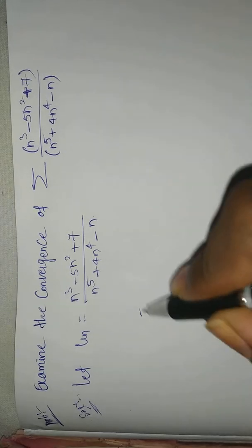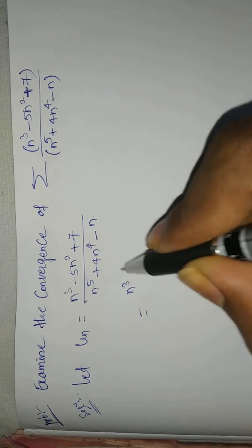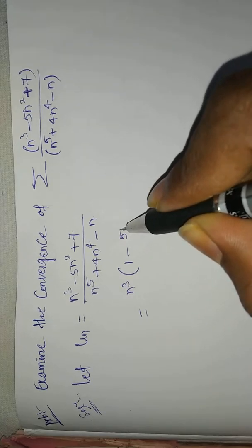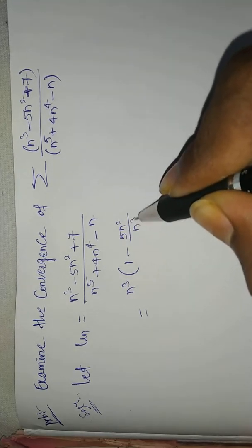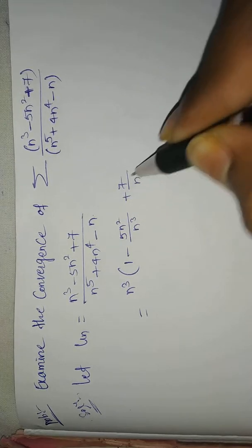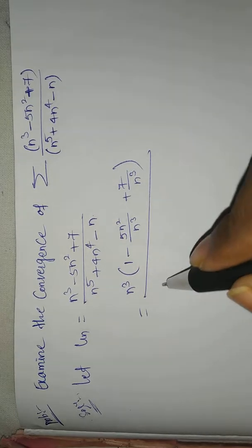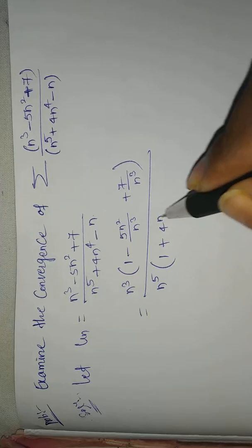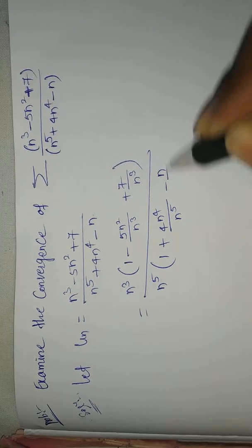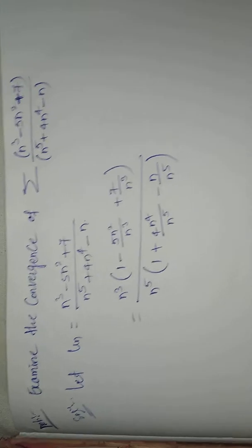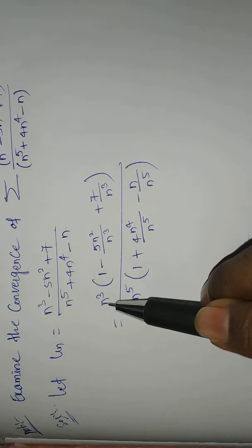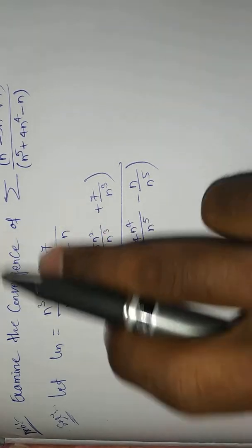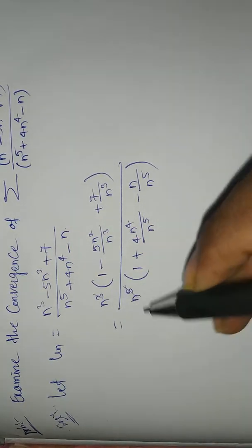Now, in the numerator take n³ as common: (1 - 5/n² + 7/n³). In the denominator take n⁵ as common: (1 + 4n⁴/n⁵ - n/n⁵). The n³ cancels out.